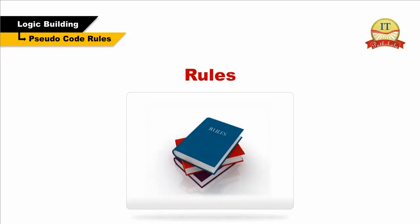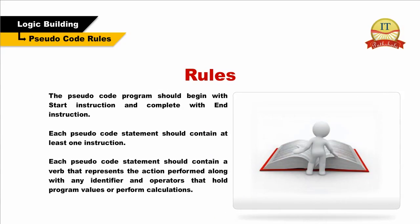Pseudocode Rules: The pseudocode program should begin with a start instruction and complete with an end instruction. Each pseudocode statement should contain at least one instruction. Each pseudocode statement should also contain a verb that represents the action performed, along with any identifiers and operators that hold program values or perform calculations.